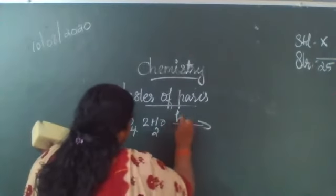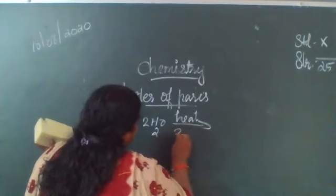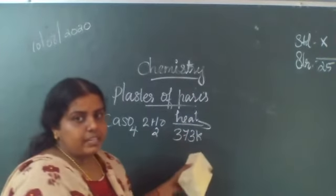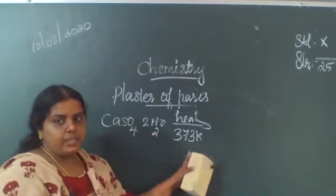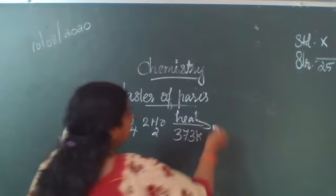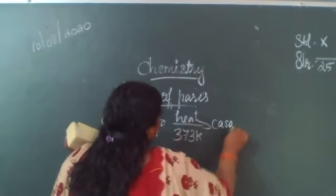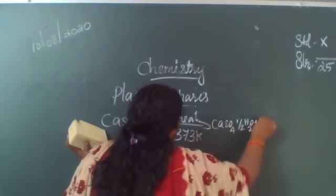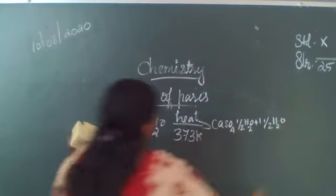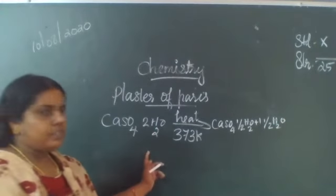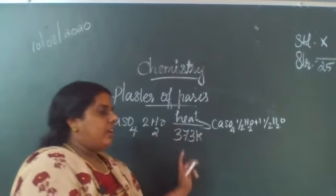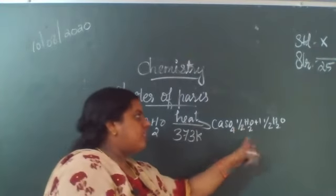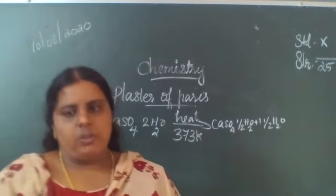Gypsum is heated at 373 Kelvin — the temperature is very, very important. CaSO4·2H2O, when heated at 373 Kelvin, gives CaSO4·½H2O plus one and a half H2O.